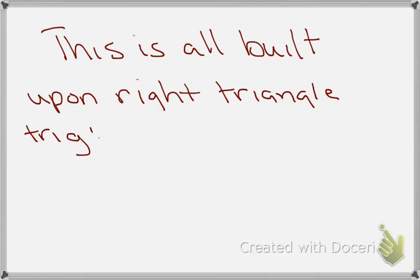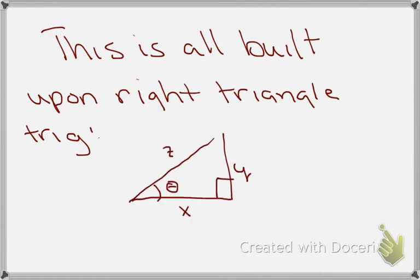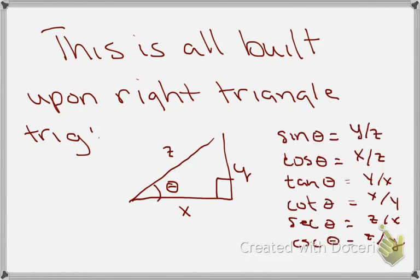This is all built upon right triangle trigonometry. We have a right triangle with angle theta, where the opposite side is y, the adjacent side is x, and the hypotenuse is z. From that we get six relationships: sine theta is y over z, cosine theta is x over z, tangent theta is y over x, cotangent theta is x over y, secant theta is z over x, and cosecant theta is z over y. We also have the Pythagorean relationship: x squared plus y squared equals z squared.